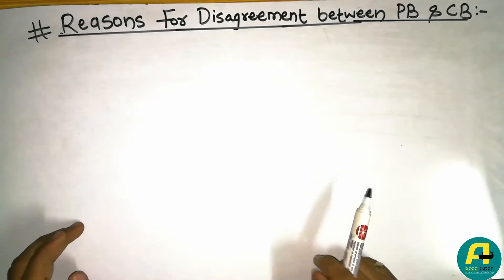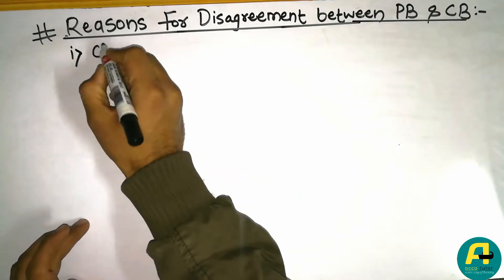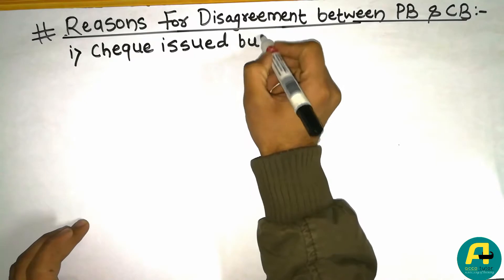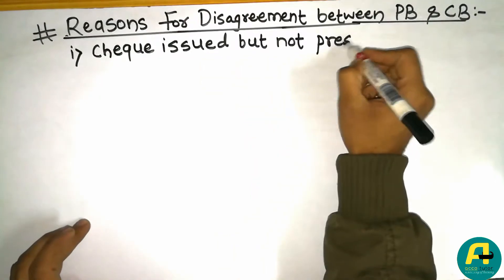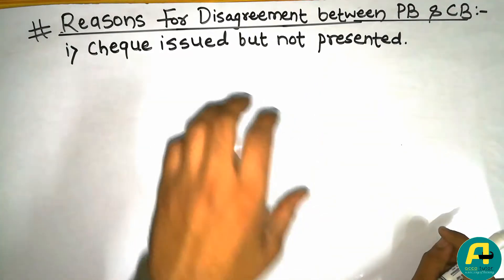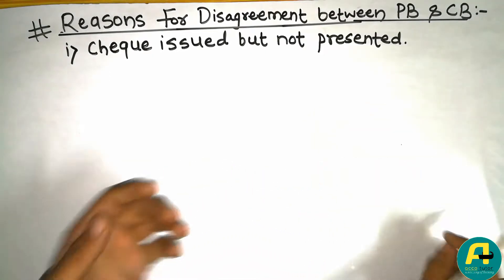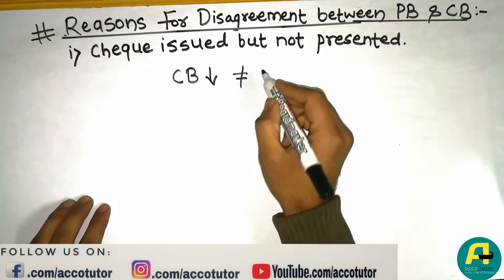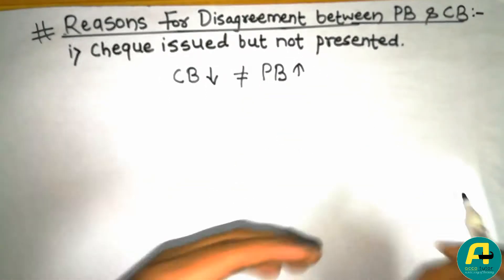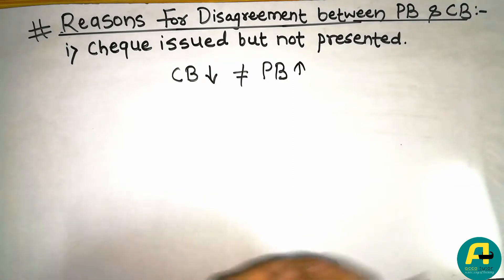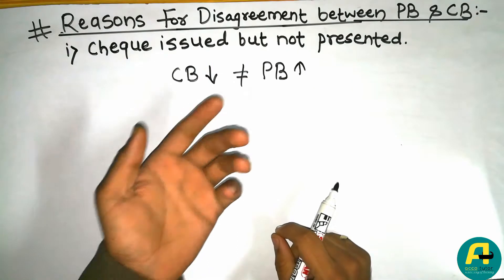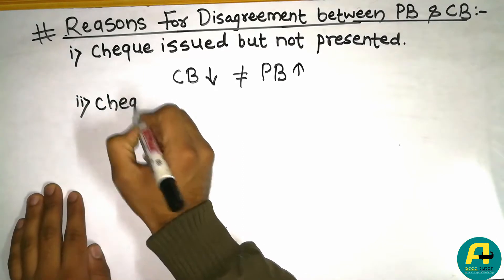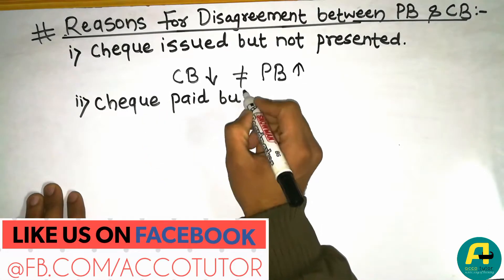The very first reason is: check issued but not presented. This means a check is already issued but it is not presented in the bank for payment purposes. This decreases the balance of the cash book but does not decrease the balance of the pass book — the pass book balance remains higher. That is why there is disagreement between the pass book and the cash book.